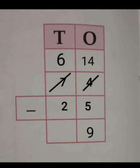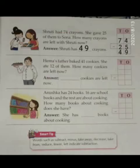Now, subtract the tens place. 6 minus 2 is equal to 4. Write 4 at the tens place. So, the subtraction of 74 minus 25 is equal to 49. Shruti has 49 crayons now.